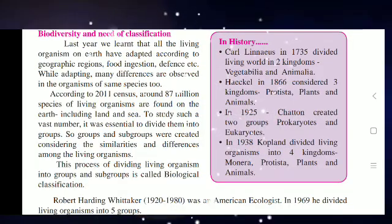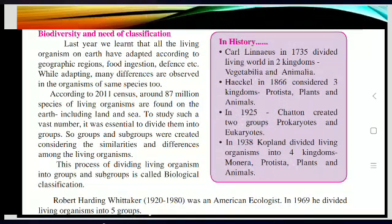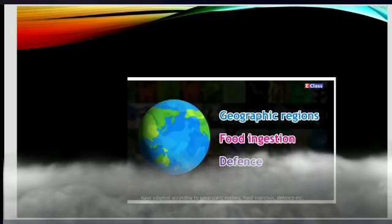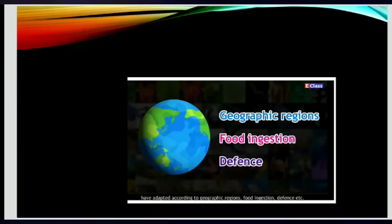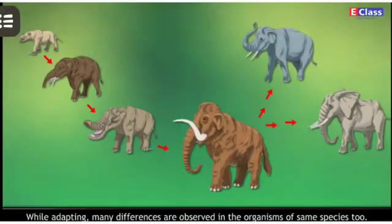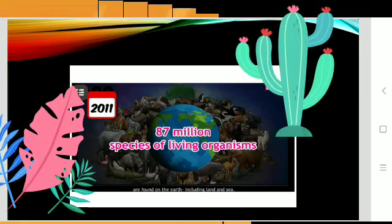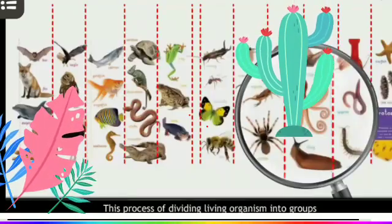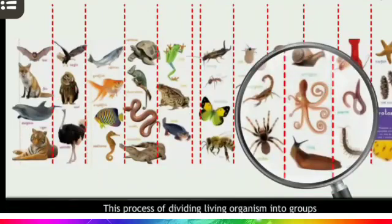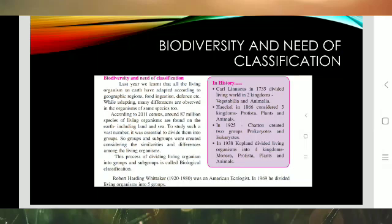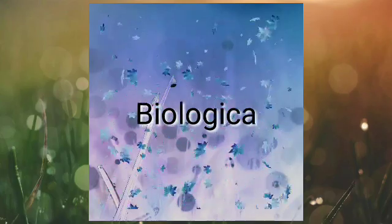Let us see the need for classification. Last year we learned that all living organisms on earth have adapted according to geographical regions for ingestion, defense, etc. While adapting, many differences are observed in organisms of the same species too. According to the 2011 census, around 87 million species of living organisms are found on earth, including land and sea. To study such a vast number, it was essential to divide them into groups and subgroups, considering similarities and differences. This process of dividing living organisms into groups and subgroups is called biological classification.